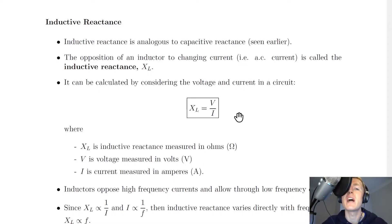Now you should remember that we saw capacitive reactance for capacitors in AC circuits, and this is just the same but this time for inductors. Inductive reactance is analogous to capacitive reactance seen earlier. We give inductive reactance the symbol capital X lowercase L, and we define inductive reactance as the opposition of an inductor to changing current, i.e. an AC current.